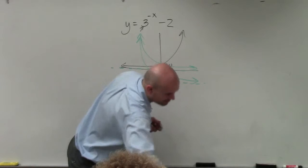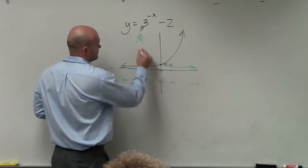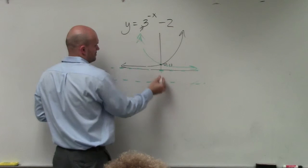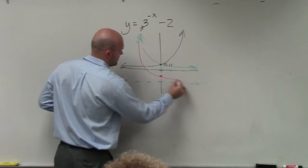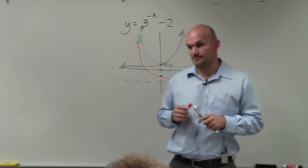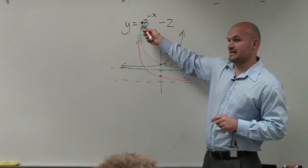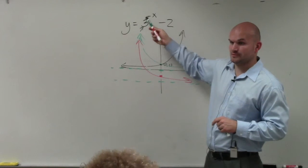Or maybe I'll do red. So the red graph is the final graph, right? So it's reflecting over the y-axis because the x is negative? Yes, inside. Because remember, if it was negative right here, it would reflect over the x-axis.